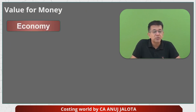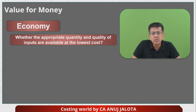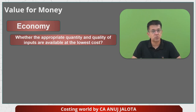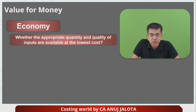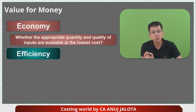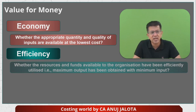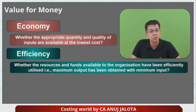The first angle is called economy — did we spend the least amount of money while considering quality? Economy stands for whether the appropriate quantity and quality of inputs are available at the least cost. If yes, we say we have achieved economy. Second is efficiency — have you achieved the highest output from minimum input? We measure efficiency as whether the resources and funds available to the organization have been efficiently used, meaning maximum output has been achieved from minimum input.